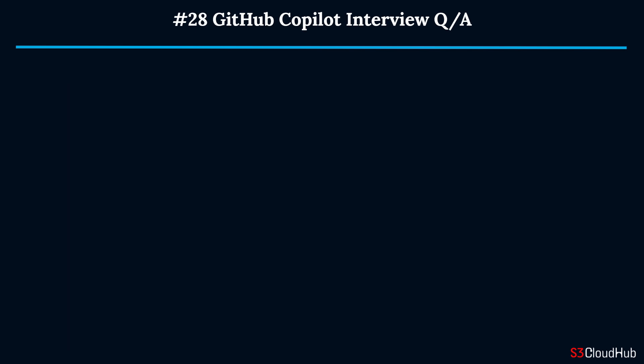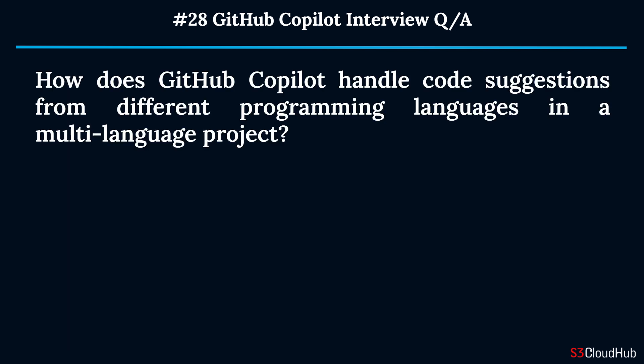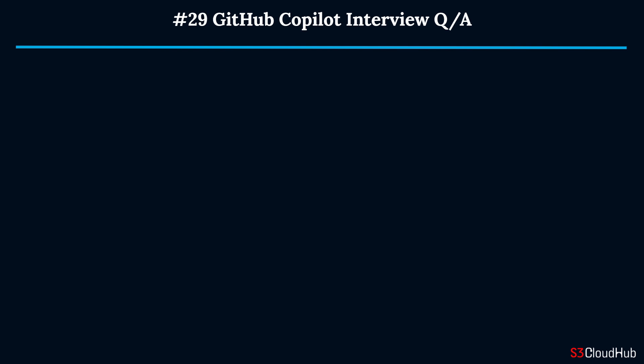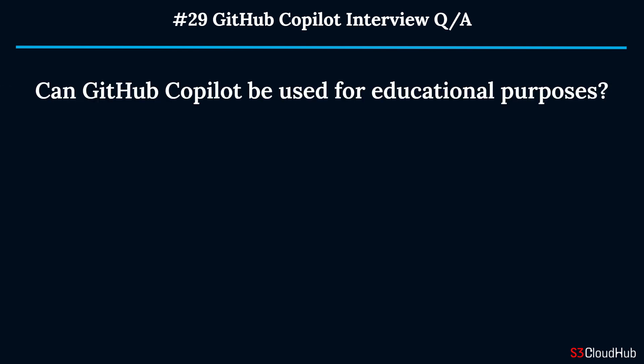Question twenty-eight: How does GitHub Copilot handle code suggestions from different programming languages in a multi-language project? GitHub Copilot can switch between languages based on the file type and context within the project, providing relevant suggestions for each language.